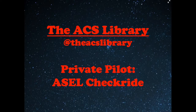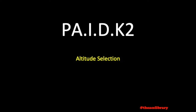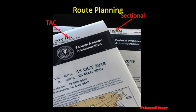Welcome to the ACS Library. My name is Kyle and I aim to help you prepare for the private pilot checkride for free in just 5 minutes a day. In today's video, we will discuss altitude selection accounting for terrain and obstacles, glide distance of the airplane, VFR cruising altitudes, and the effect of wind. We will use a VFR sectional chart or a terminal area chart for the purposes of this video.